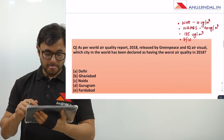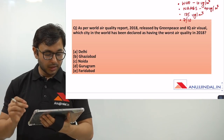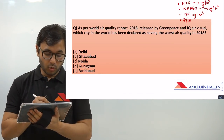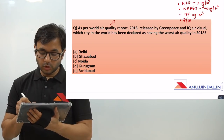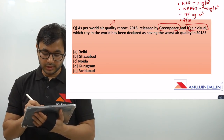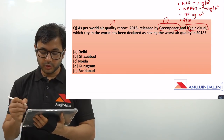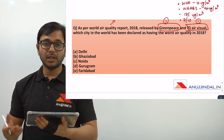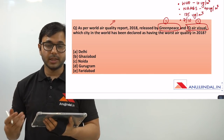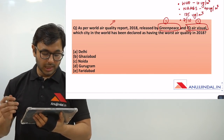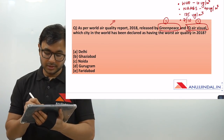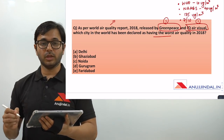Let's come to the second question. As per World Air Quality Report 2018 — and who releases this report? NGOs Greenpeace and IQ Air Visual. So a possible exam question is: which organization publishes World Air Quality Report? The question now is: as per World Air Quality Report, which city in the world has been declared as having the worst air quality in 2018?